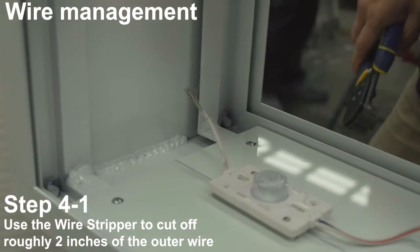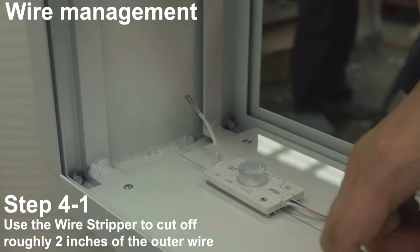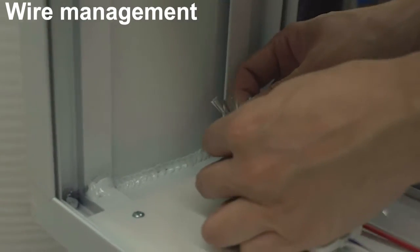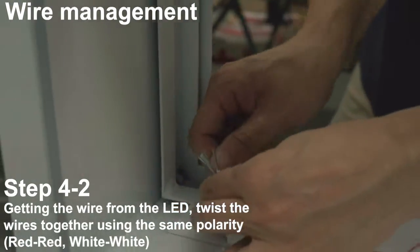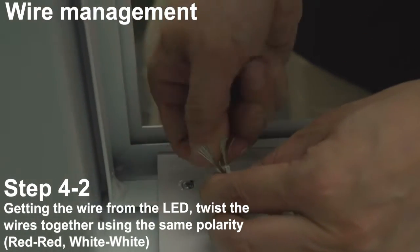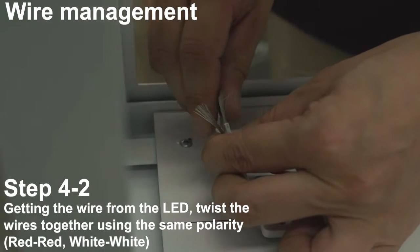Use the wire stripper to cut off roughly 2 inches of the outer wire. Get the wire from the LED and twist the wires together using the same polarity, red to red and white to white.